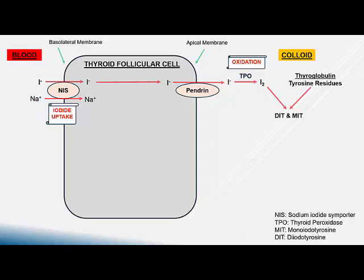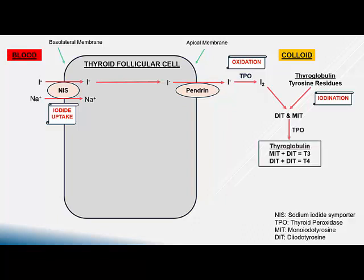This process of combining iodine with tyrosine residues is called iodination. Within the thyroglobulin molecule, DIT combines with MIT to form T3, or DIT combines with another DIT to form T4. This step is called coupling or condensation.